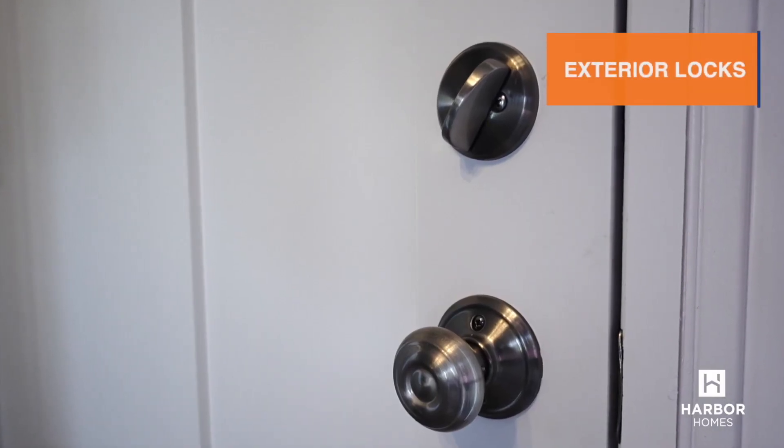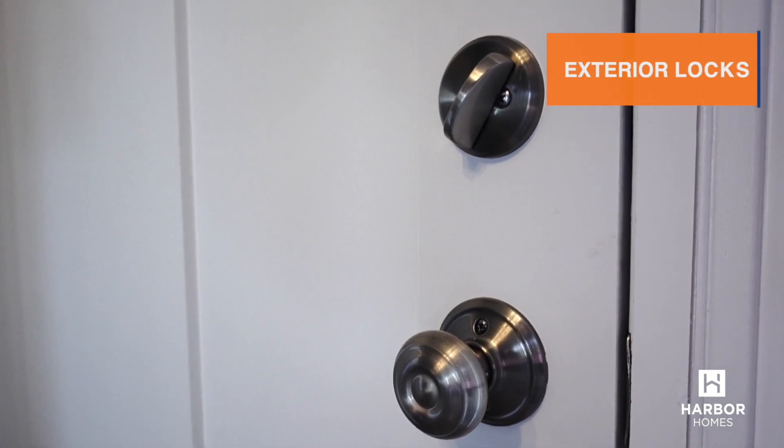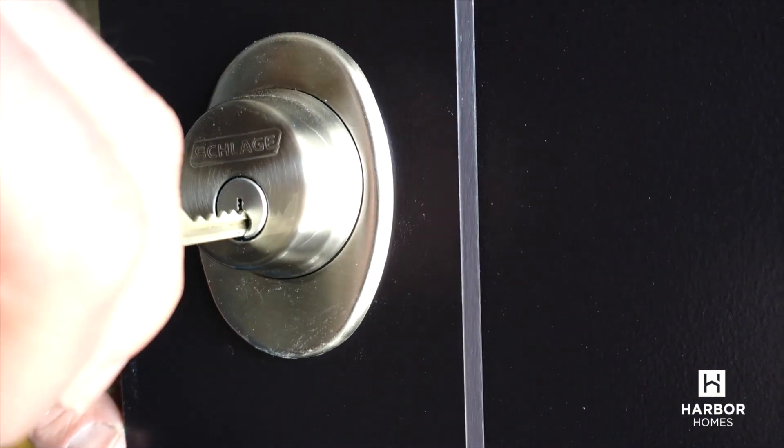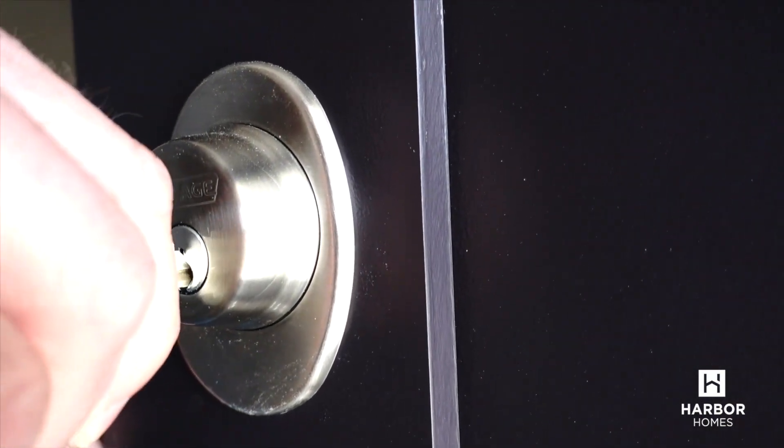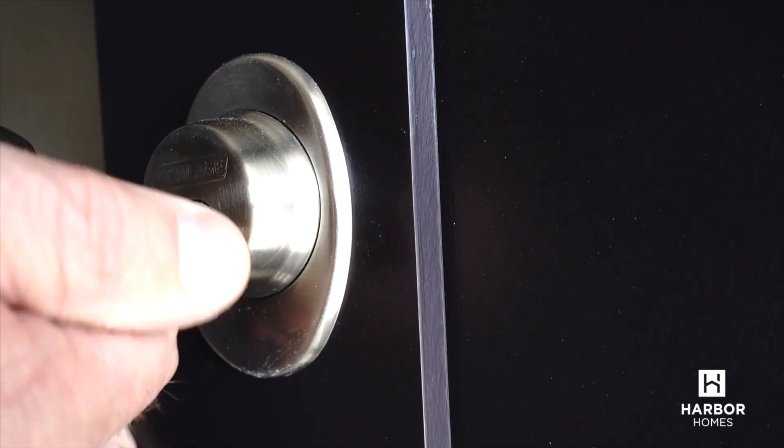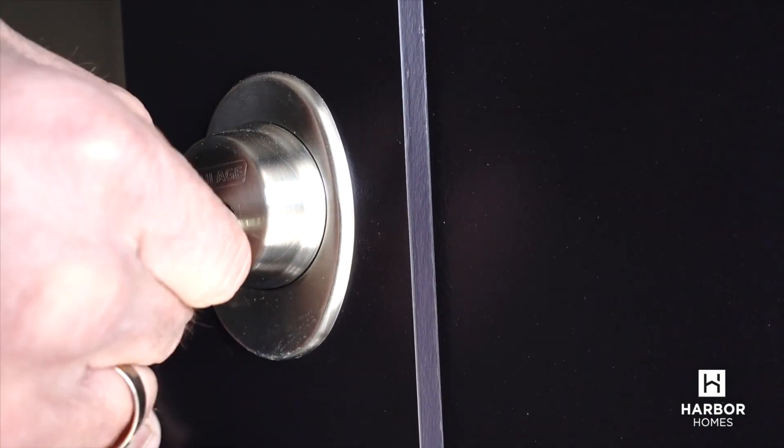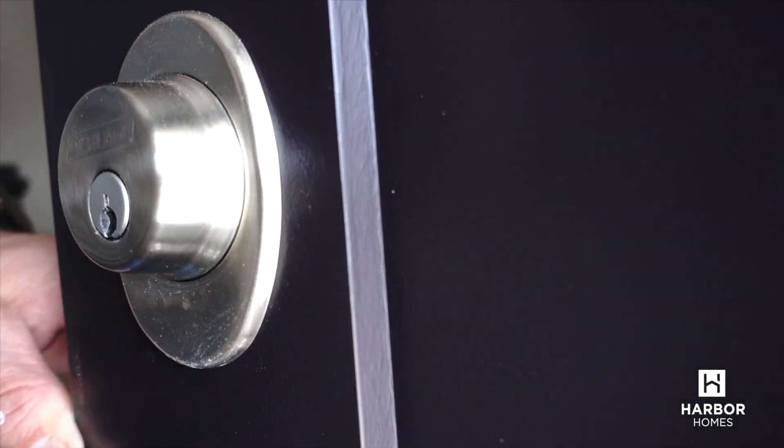While your home was being built, all the locks used the same master construction key. To re-key the locks so they only work with your keys, take your key, insert it into the lock, and turn it in both directions. That will re-key the locks and void the construction key.